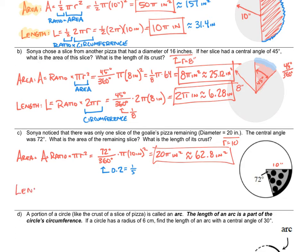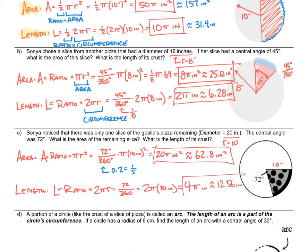Let's take a look at the length of crust. I have 72 over 360, which is one-fifth. One-fifth times 10 is 2, and 2 times 2π gives me 4π. So the crust length is 4π inches. And 4 times 3.14 is 12.56 inches — just over one foot in crust length.